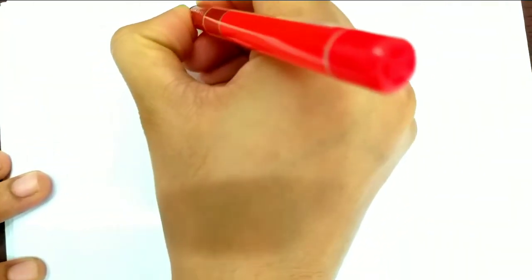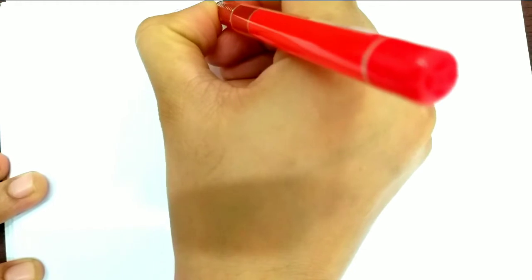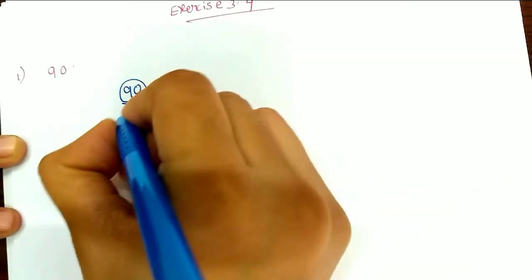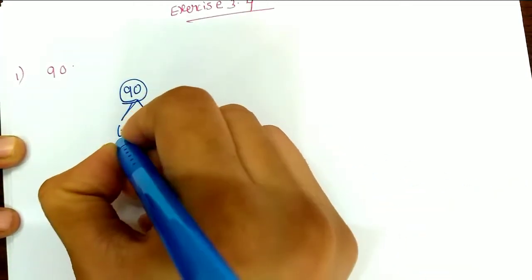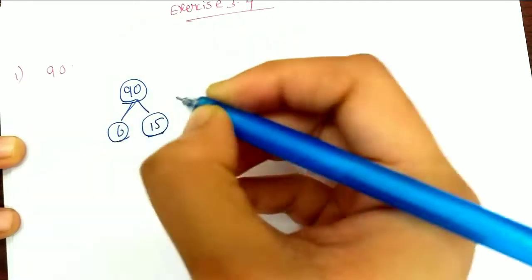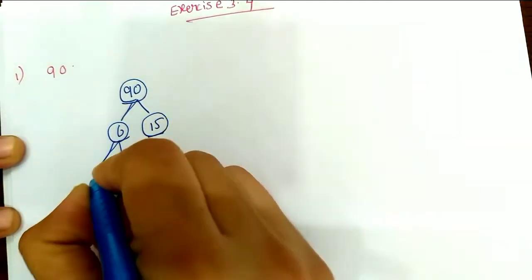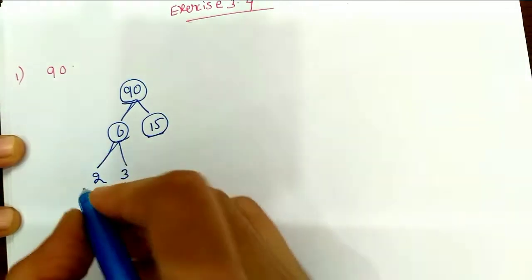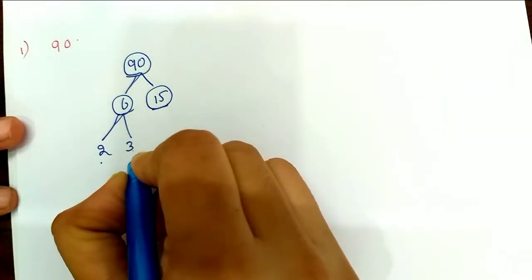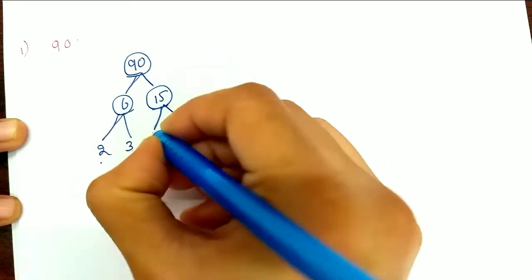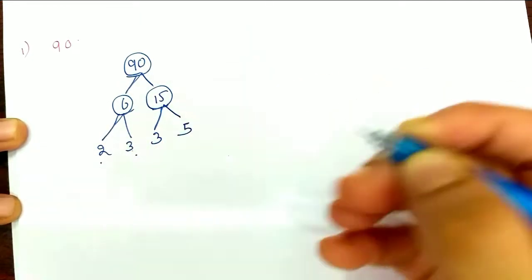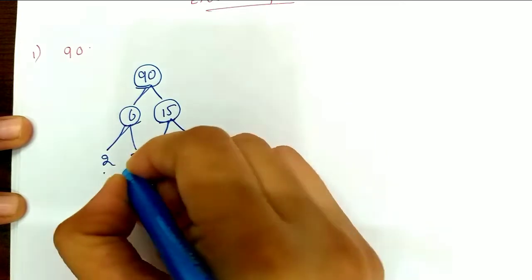Let's start Exercise 3.4. The first problem is 90. So, 6 times 15 is 90. Next, 3 times 2 is... so there will be 2 and 1, and the prime number is 3. Next, 15 is 3 times 5, so the prime number is 5.